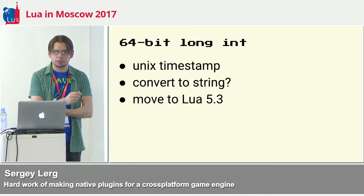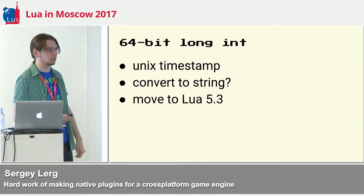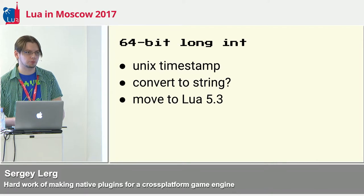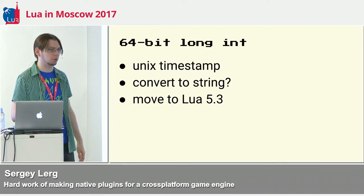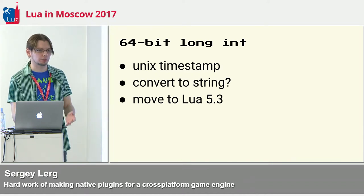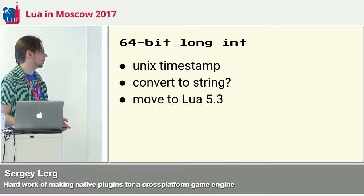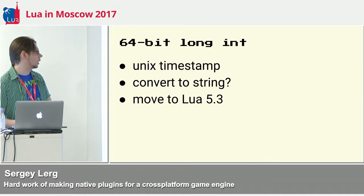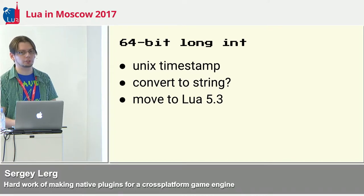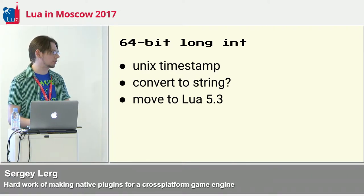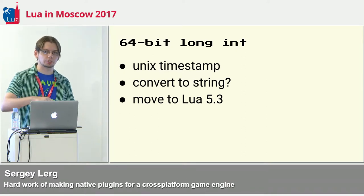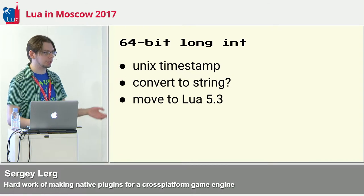Another problem: Corona uses Lua 5.1, and there's no 64-bit integer data type yet. Sometimes when I receive from third-party libraries values that are 64 bits, I need to convert them back to either Lua numbers — potentially losing precision — or convert them to string. It's debatable and really comes down to the specific use case. We could move to Lua 5.3, but it requires a lot of porting because the Lua version in Corona is slightly modified to meet certain requirements, and it's not going to happen soon. For now, if it's a unique timestamp or something very important, I convert it to string; otherwise to number.